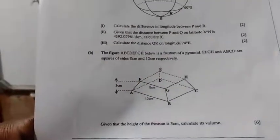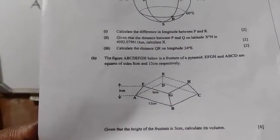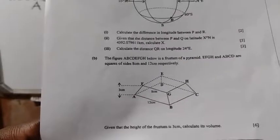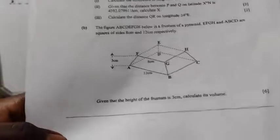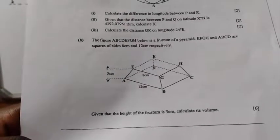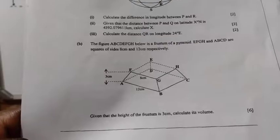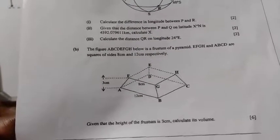EFGH and ABCD are squares of sides 8 cm and 12 cm respectively. Given that the height of the frustum is 3 cm, calculate its volume. This question is carrying 6 marks.